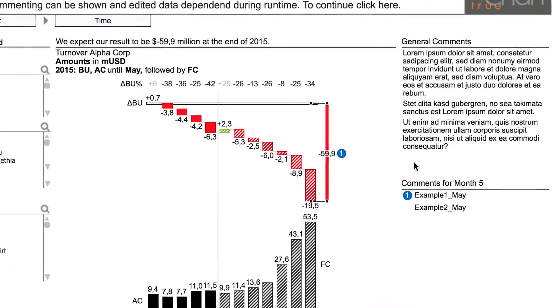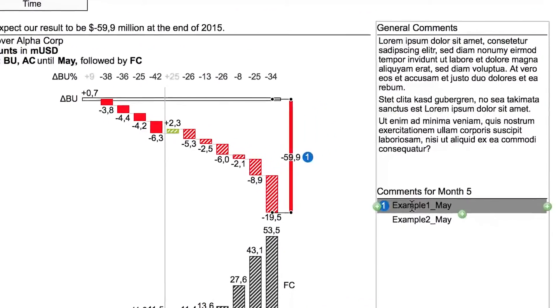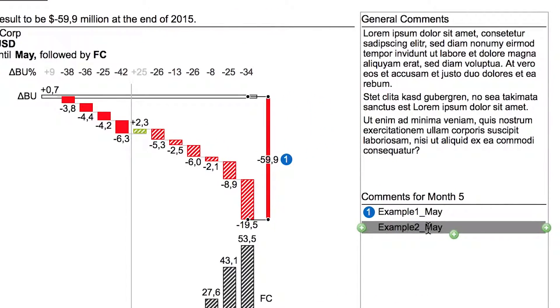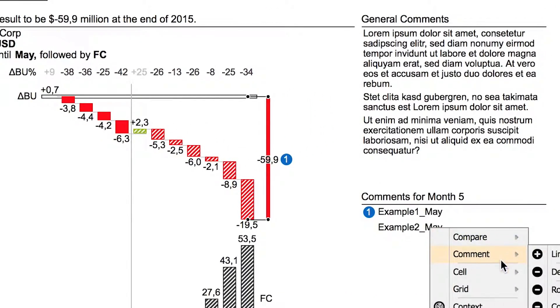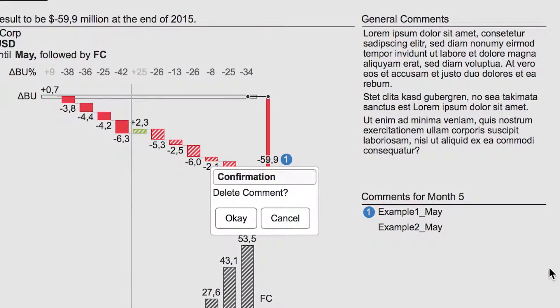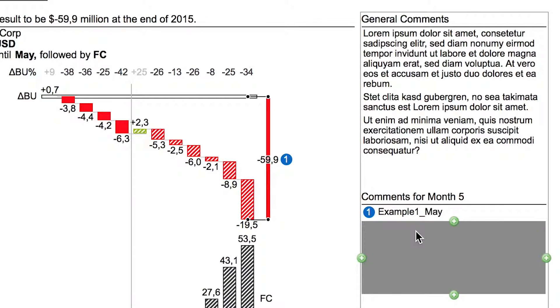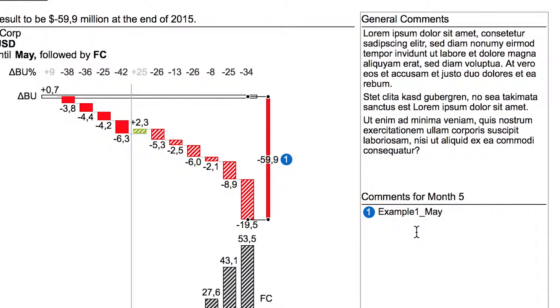On the right side we can place general and specific comments. We can remove a comment or add a new note by clicking into the comment box and typing the note. Leaving the box with a click saves the changes.